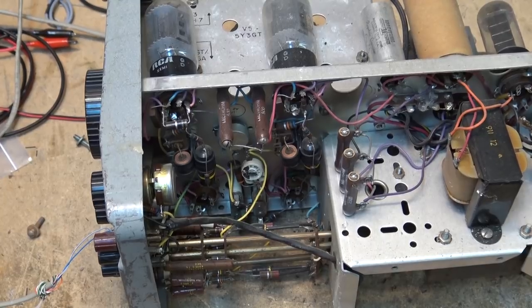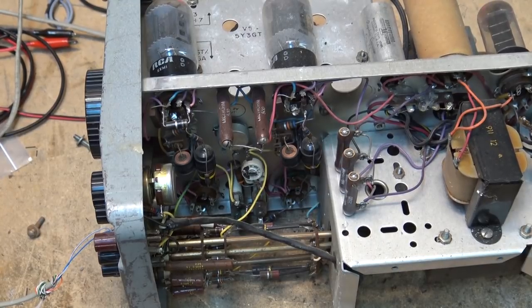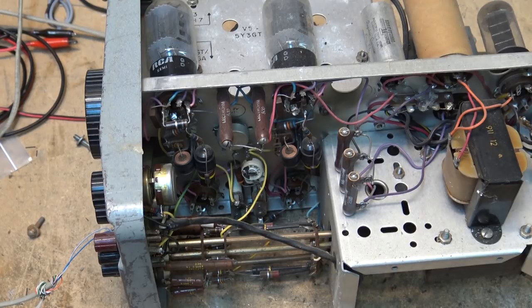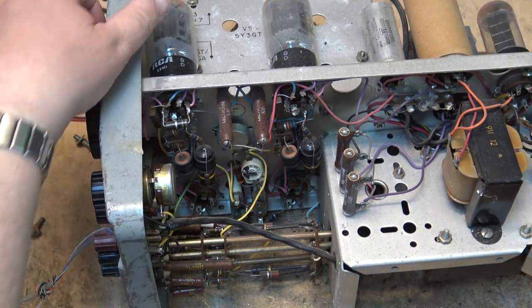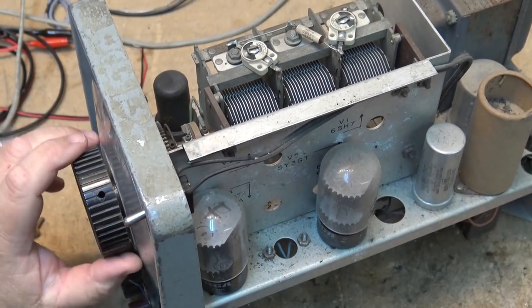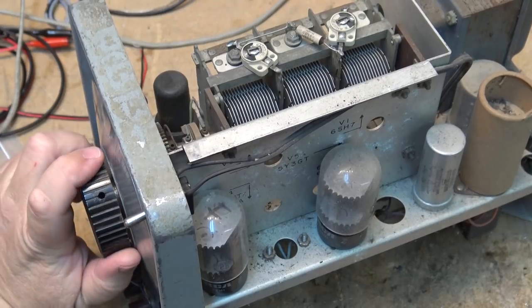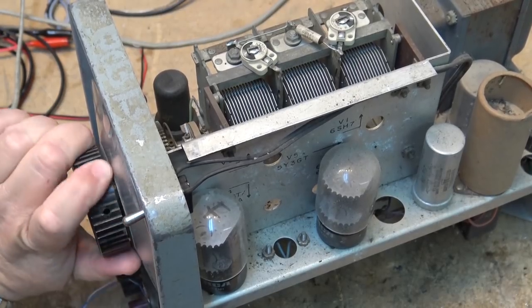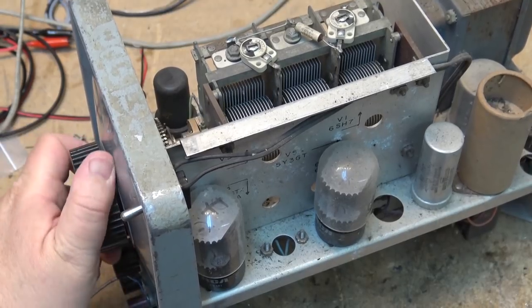This thing's all full of webs and bugs and stuff. It's been sitting around for many many years. I got this and that old scope at the same time. But it actually looks to be in pretty good shape. I just have to tighten up the set screw here so that there's no more play in the knob.